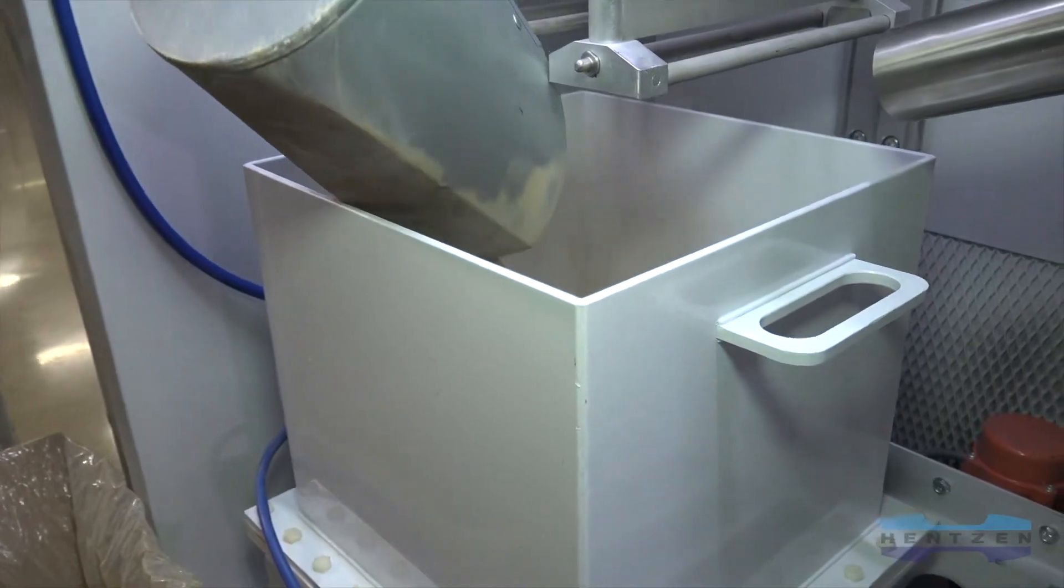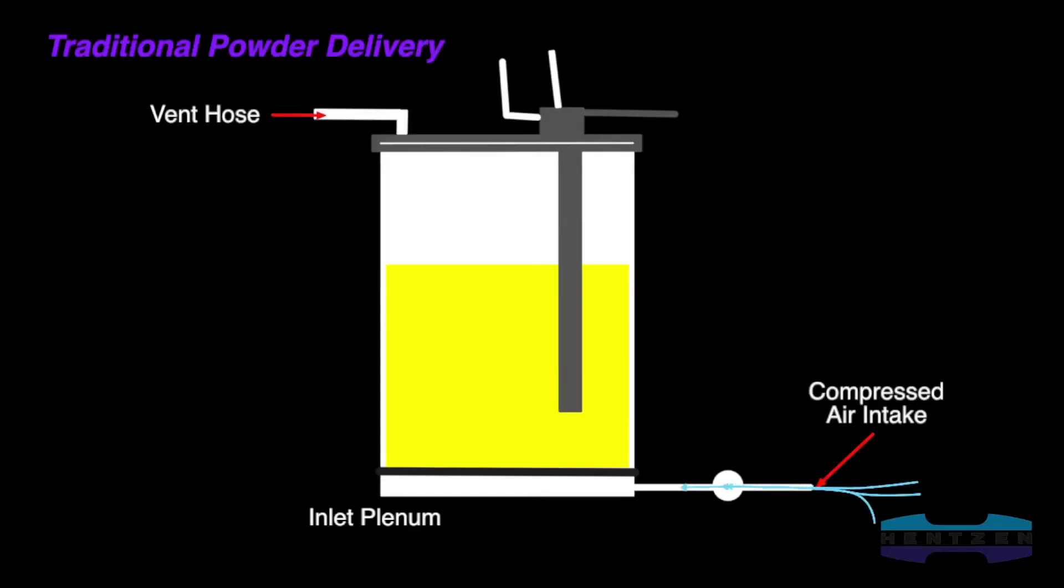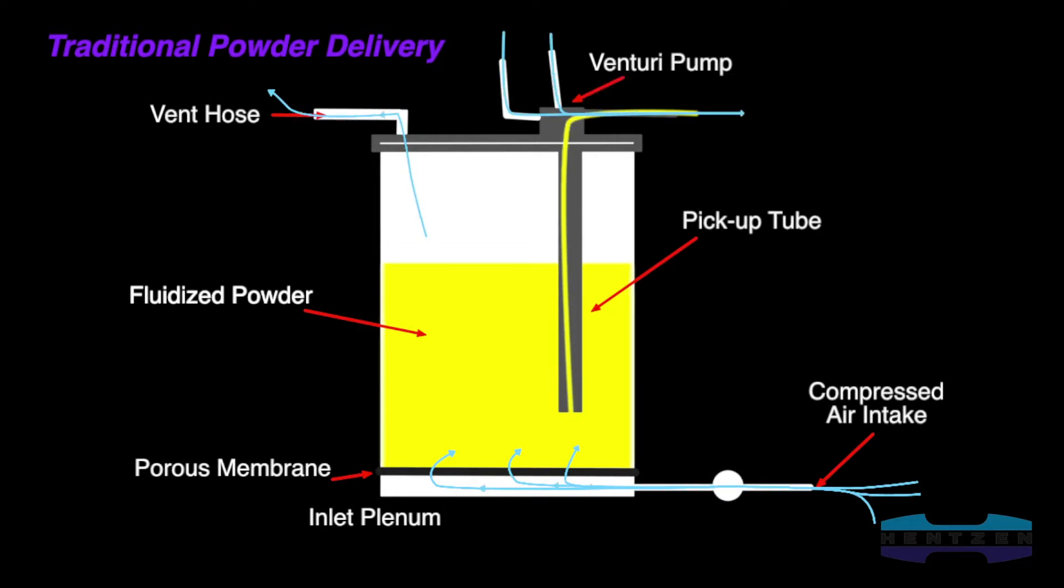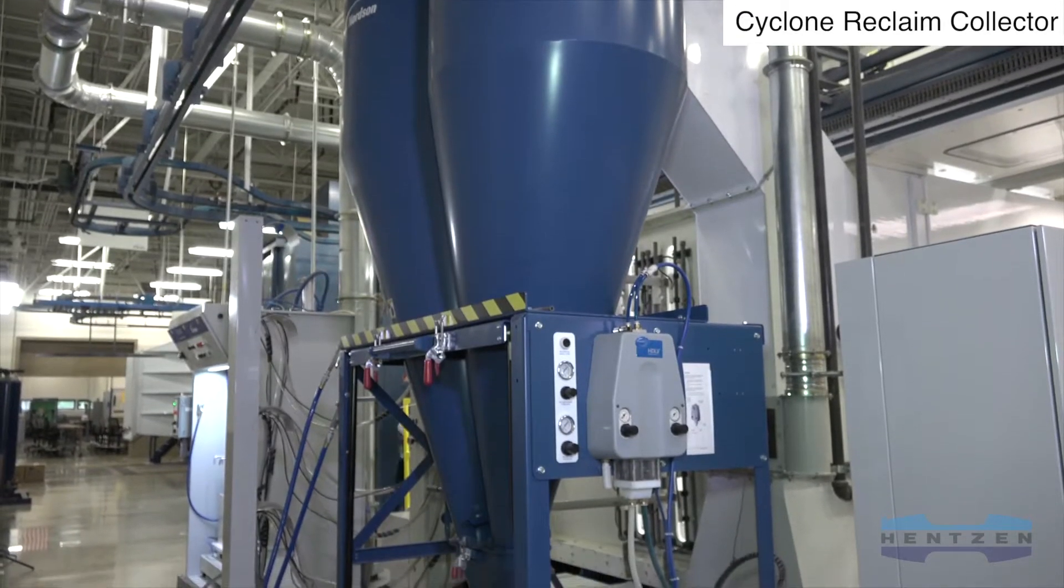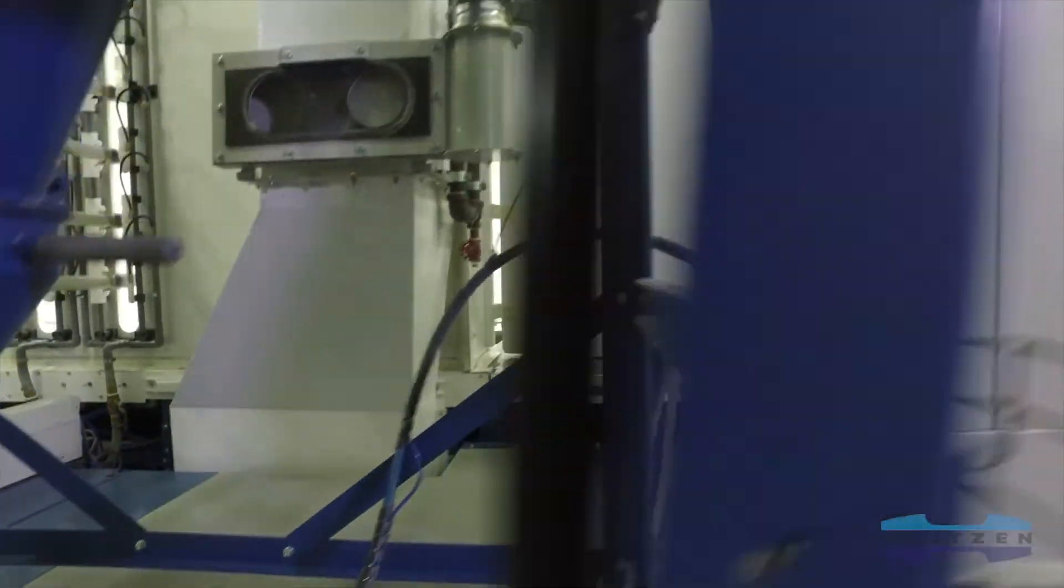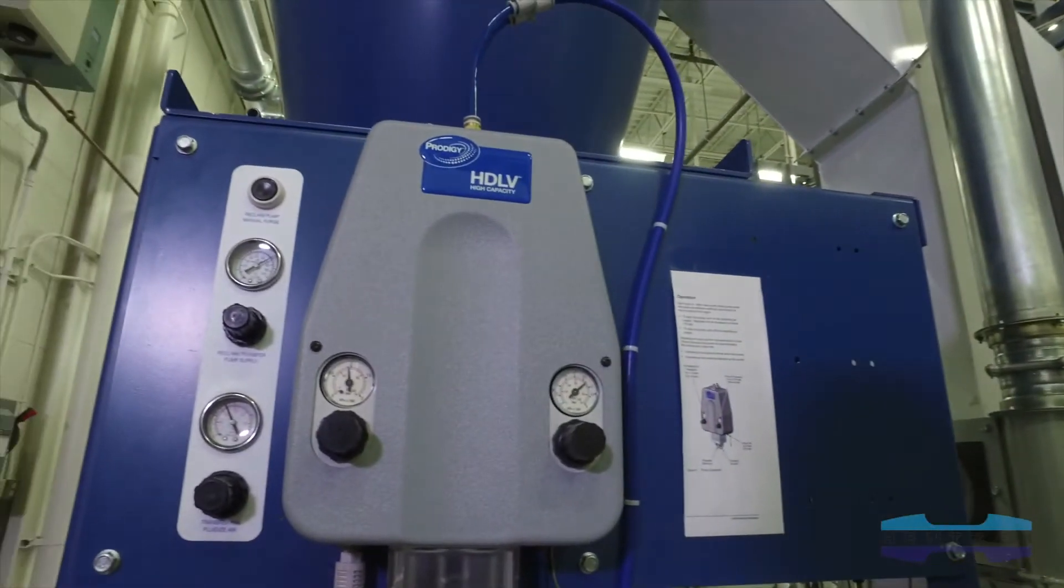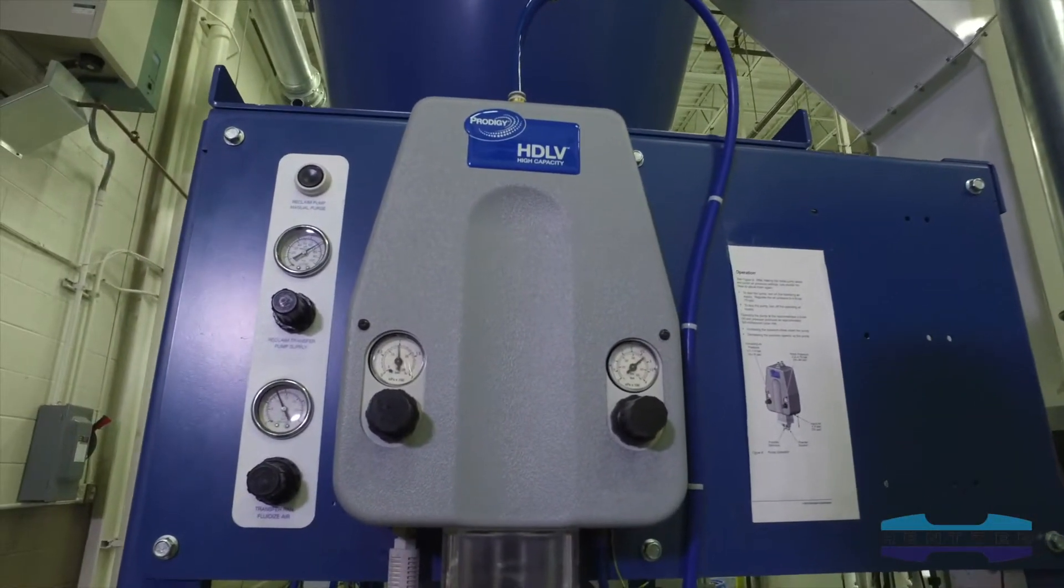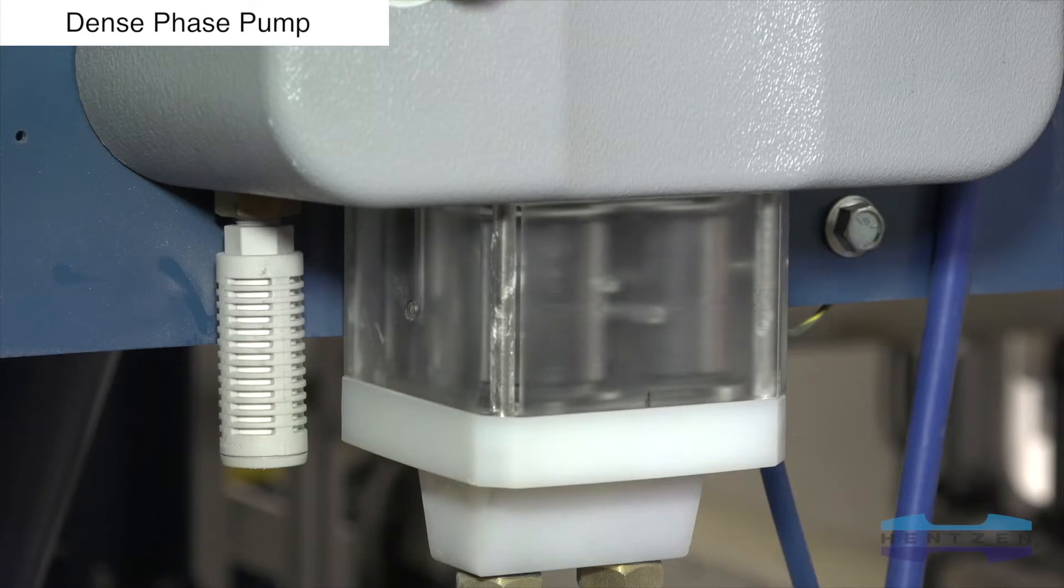Once the virgin powder coating is introduced into the paint system, it is pumped from the feed hopper to the powder coating guns using Venturi pumps or dense phase pumps. Reclaimed powder is then pumped from the cartridge reclaim collector unit or cyclone collector unit back to the gun feed hopper.